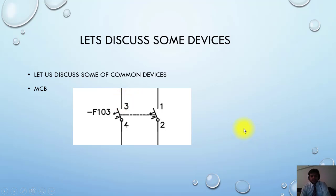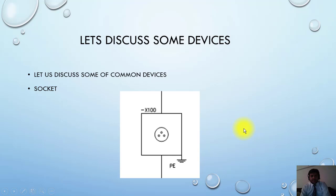The next symbol, which is very easy - in your houses you can also find sockets. So this is the symbol of socket. This is basically a receptacle where you can connect your plug and draw power. This point PE is showing that it is earth. Also X100 here is the name of the device.